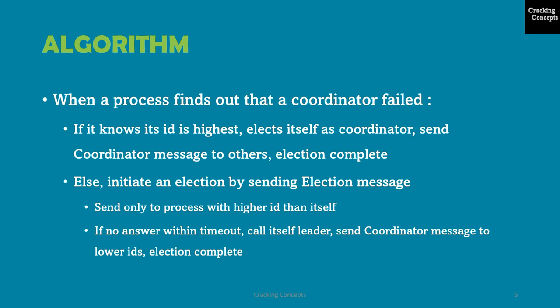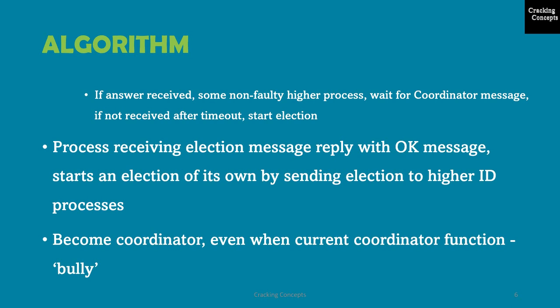This election message is only sent to processes with a higher ID than itself. After sending the message, if it doesn't receive an answer within the timeout period, it calls itself the leader and sends the coordinator message to all lower ID processes, completing the election. If it does receive an answer, it means there is some process with a higher ID, so it will wait for the coordinator message. If that message is not received after another timeout, it will start a new election run.